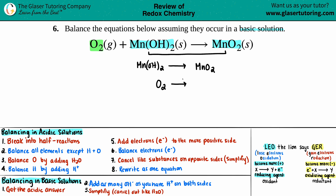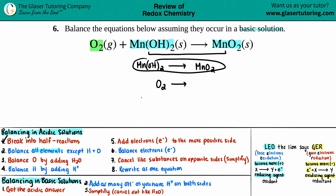Step one is done. Step two: always balance all elements except for hydrogen and except for oxygen — do not balance hydrogen and oxygen yet. I have one Mn and one Mn, so that's balanced, and the remaining elements are all oxygen and hydrogen, so I don't have to do any more of step two. Notice how I'm going to do all of step two first for both equations, then step three for both, step four for both — don't run through one through eight for the first equation and then come back. Step three: balance the oxygen by adding H₂O.